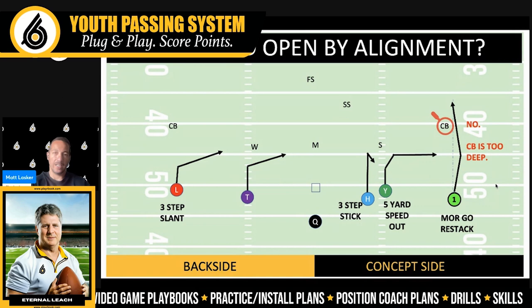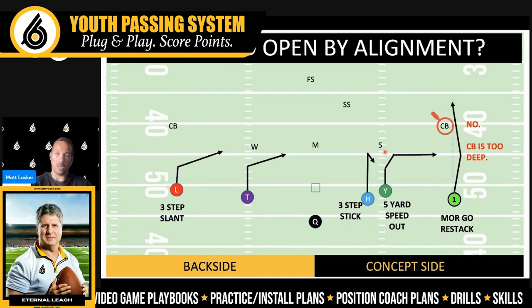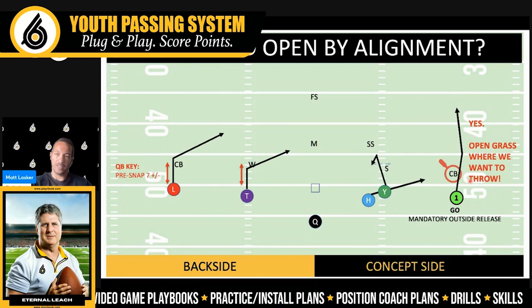If we are just looking at our first read and the defender in conflict with that first read, they will tell us everything we need to know regardless of what coverage the defense is in. We are back in our Star set and we've called the concept Fade Out. In Fade Out our progression is go, out, stick. We look at our first read and then turn our attention to the cornerback covering him. If this cornerback is seven yards off or more, he is essentially in the deep third where we are trying to throw — so he is not open by alignment.